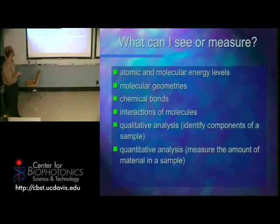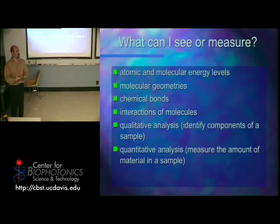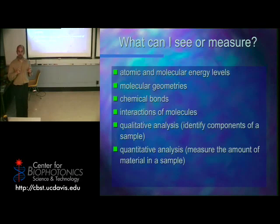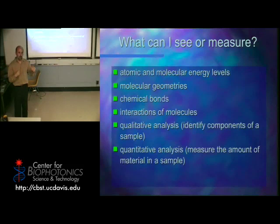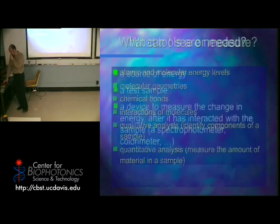What can you see from spectral information? You can figure out atomic and molecular energy levels, think about geometries — the shape of the molecule, because different shapes have different energies and thus different spectra. You can think about chemical bonding and how molecules interact with others. If water is ice versus being warmed up, the interactions between water molecules are different, so the energies measured will be different and you'll see spectroscopic differences. You can identify components and measure the amount of material in the sample.